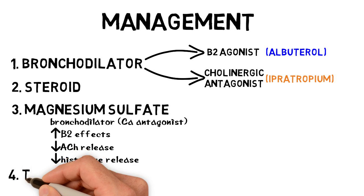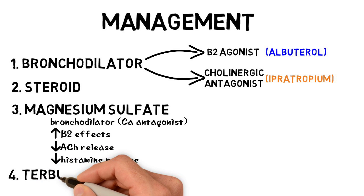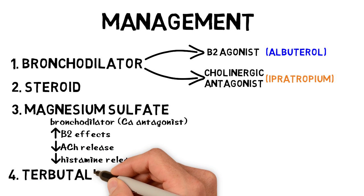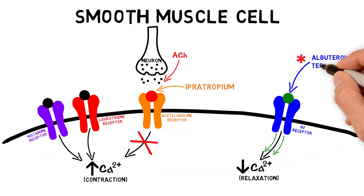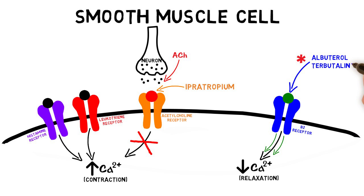Finally, we have terbutaline. Terbutaline, like albuterol, is a selective beta-2 agonist, so it works on the same receptor. It has a worse side effect profile than albuterol, but can be of benefit because it is given IV, making it easier to achieve a therapeutic effect in the small airways.